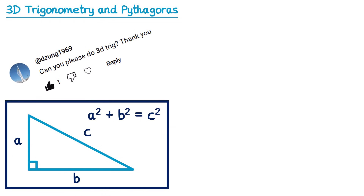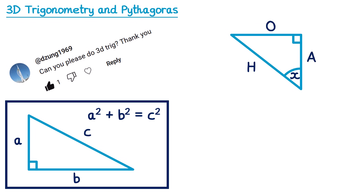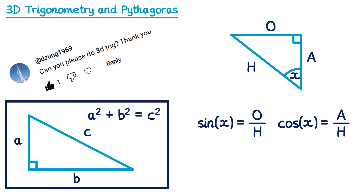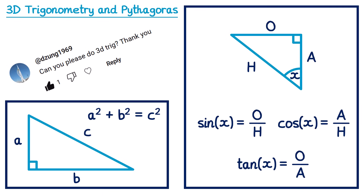For 2D trigonometry we take a right-angled triangle, and if we label the angle x, we then label the sides: the hypotenuse opposite the right angle, the opposite opposite the angle given, and the adjacent next to the angle given. We can then write down that sine of the angle is opposite over hypotenuse, cos of the angle is adjacent over hypotenuse, and tan of the angle is opposite over adjacent.